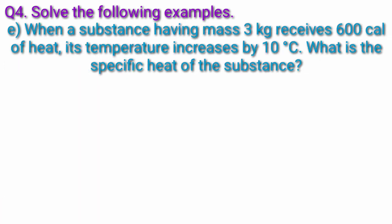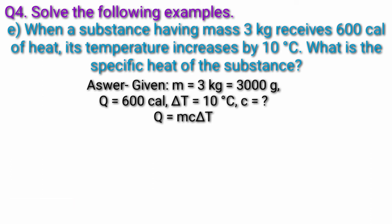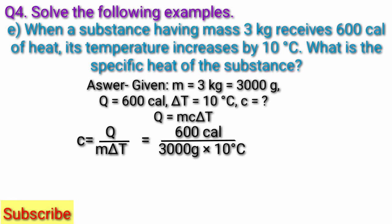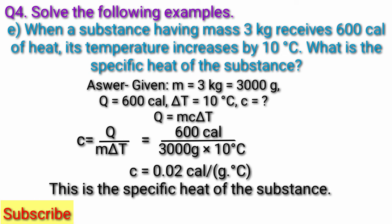Question 4E: When a substance having mass 3 kg receives 600 calories of heat, its temperature increases by 10 degrees Celsius. What is the specific heat of the substance? Given: M = 3 kg = 3000 g, Q = 600 calorie, delta T = 10°C. Using C = Q / (M × delta T) = 600 / (3000 × 10) = 0.02 calorie per gram per degree Celsius. This is the specific heat of the substance.